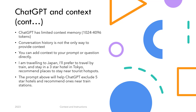ChatGPT is a computationally heavy application used by hundreds of millions, and keeping track of all conversation history and using it for context is both economically and computationally expensive. Therefore, there is a limit to the context window, which ranges from 1024 to 4096 tokens, or words in plain English. ChatGPT tries to take the entire conversation history as context if possible. Conversation history is ChatGPT's way of building context, but sometimes it's not enough — sometimes it's your job to provide relevant context.